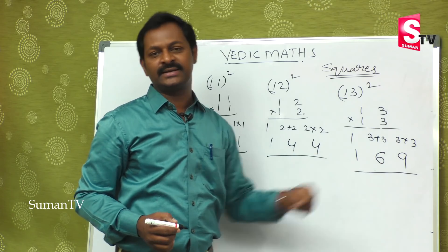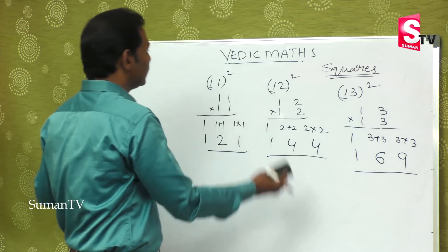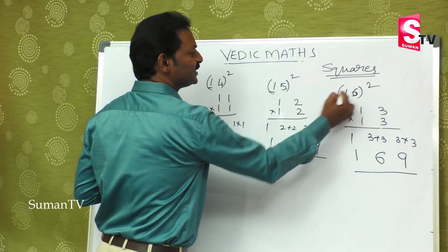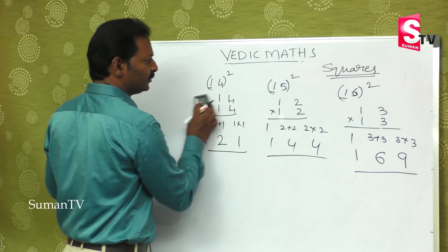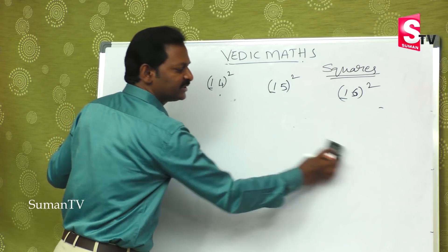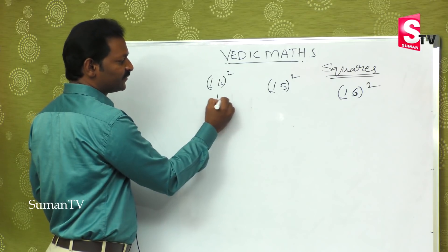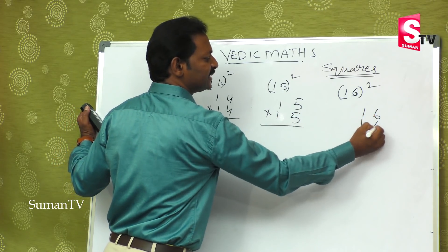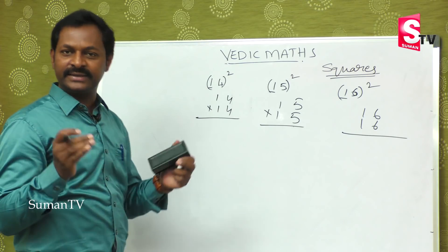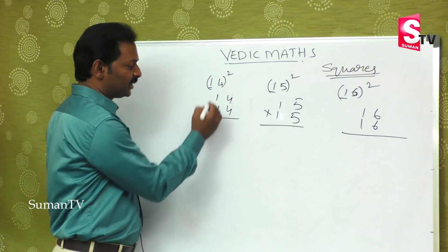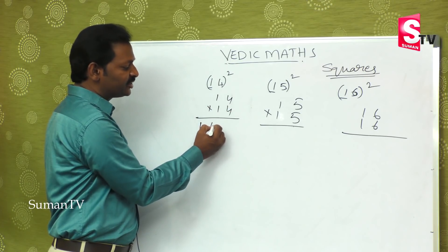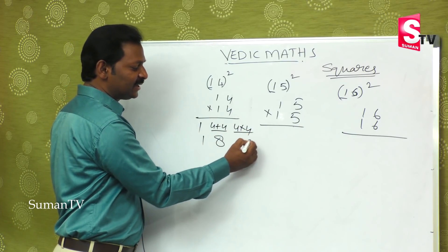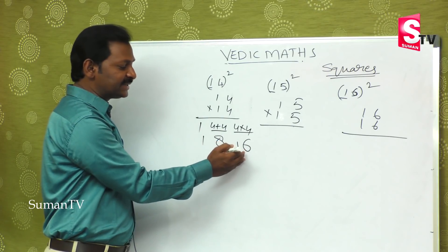Now suppose it is 14-square or 15-square or 16-square. These are 14 into 14, 15 into 15, 16 into 16. For 14 into 14: the first step is one into one which is one, then four plus four which is eight, then four into four which is sixteen — a double digit number. Since sixteen is a double digit, we apply balancing.